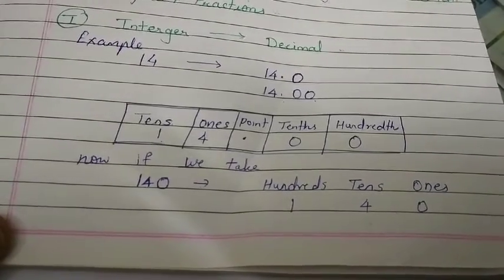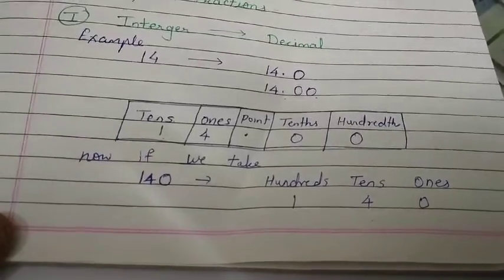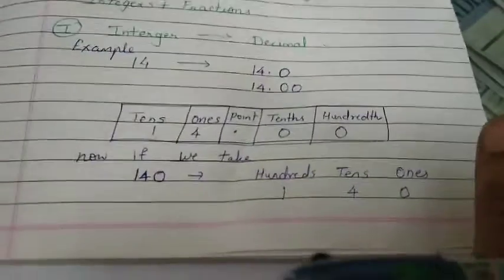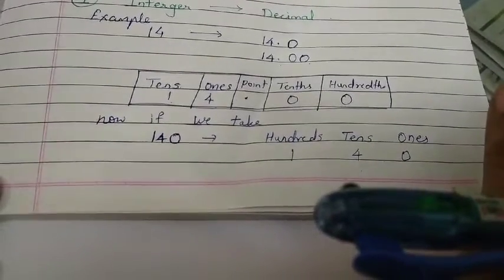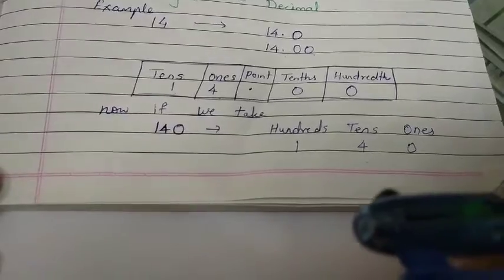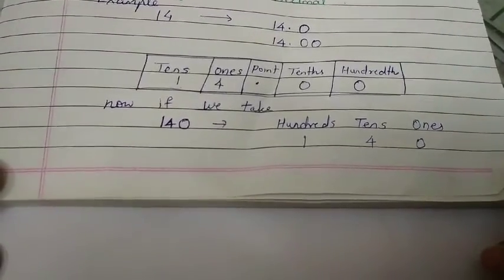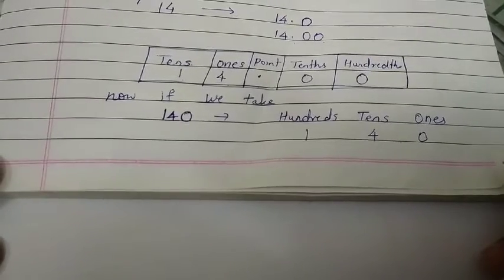We have seen the example from integer to decimal without changing the value of the number. Now, we have seen that the number we have changed from integers to decimal without changing the value of the number. That is 14.00, we have kept 14.00, now let's see how to convert fractions to decimals.